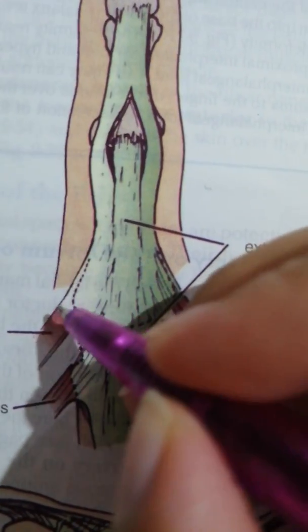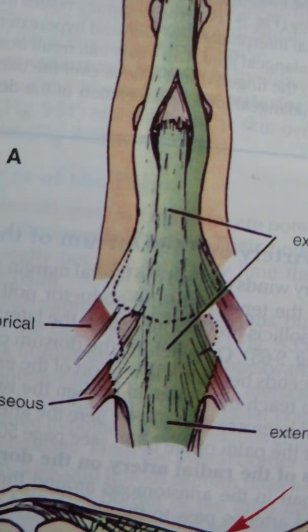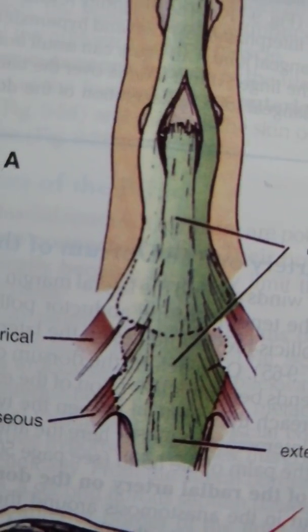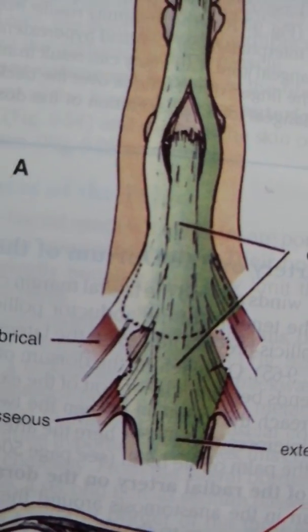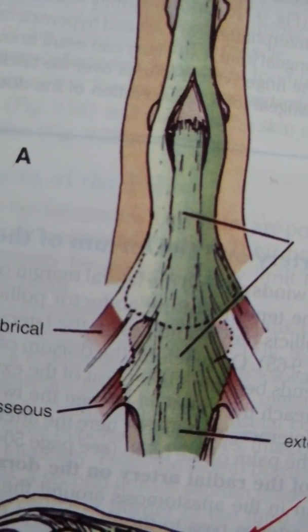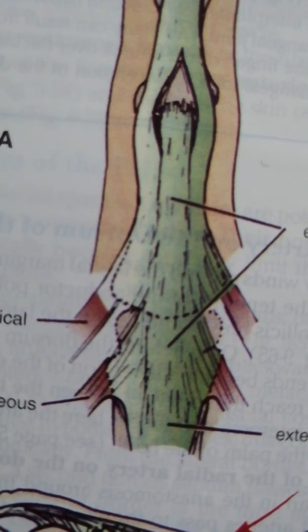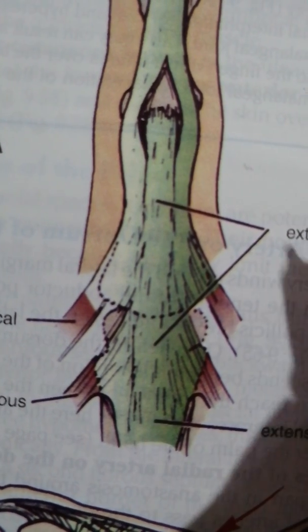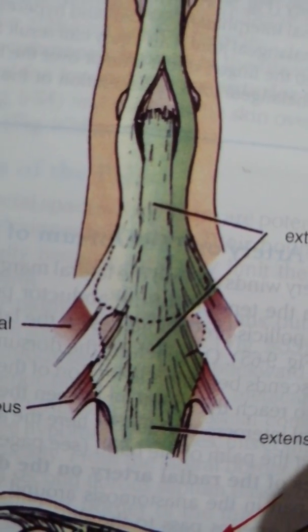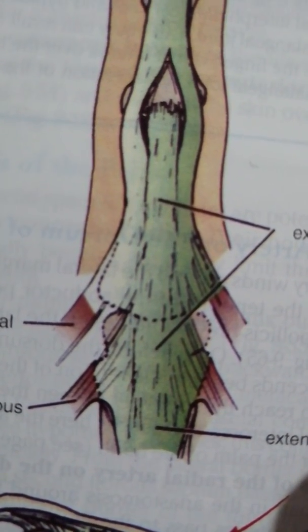Posterolaterally, the triangular aponeurosis receives the insertion of the lumbricals and the interossei. The interossei, they attach more proximally compared to the lumbricals. And the corners of the aponeurosis are attached to the deep transverse metacarpal ligament.